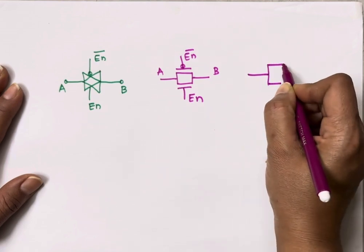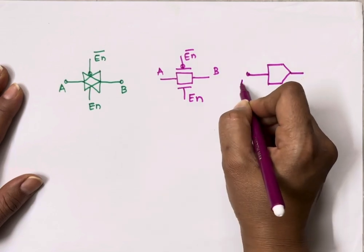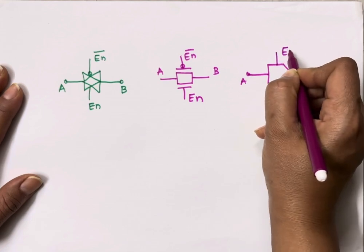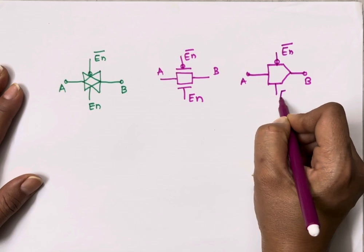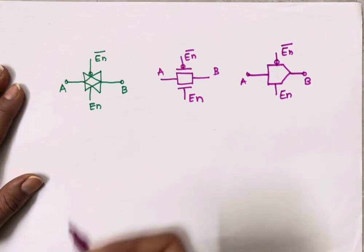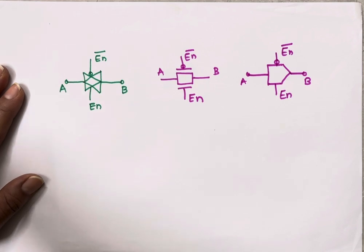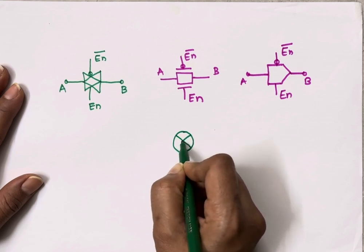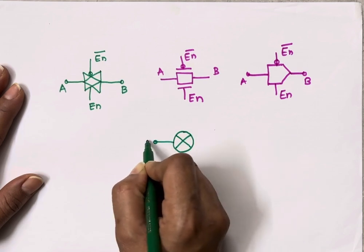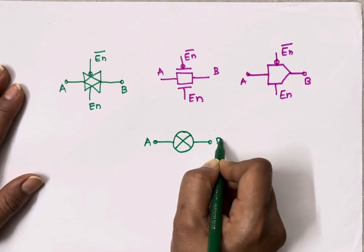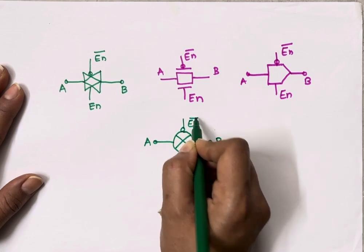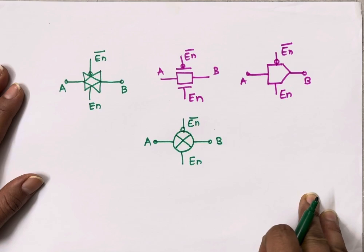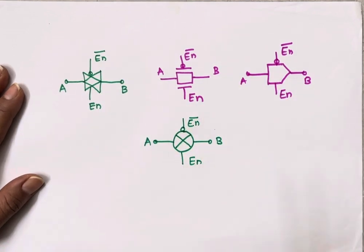You can use any symbol for implementation of a transmission gate. One more symbol includes enable-bar with a bubble, and here is the enable input. There is one more symbol as well — here is A, this is output B, enable-bar, and here is enable. So for implementation of your circuit using transmission gate, out of these four symbols, you can use any one.